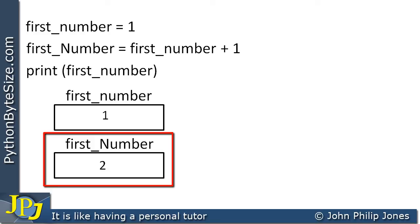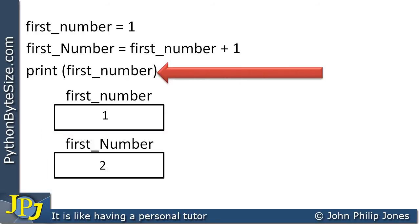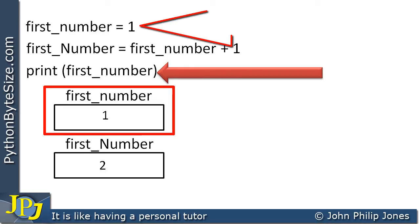And then the next thing that happens, we actually print first_number, and we have to be careful what we mean by this. What we mean is we're going to be printing the content of this variable, which has one in. That was given one at this point here.